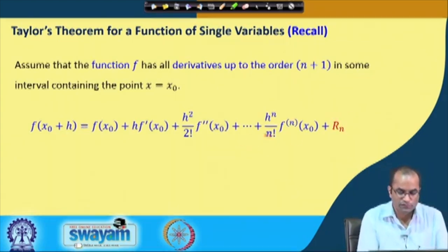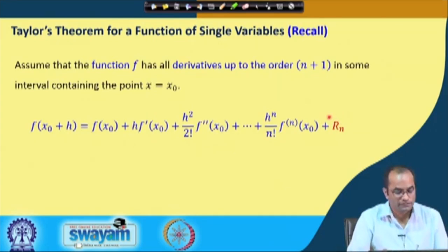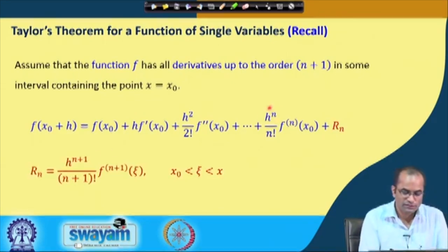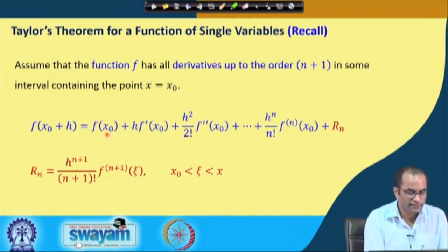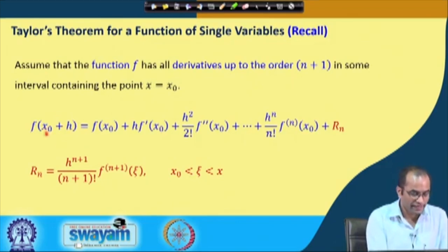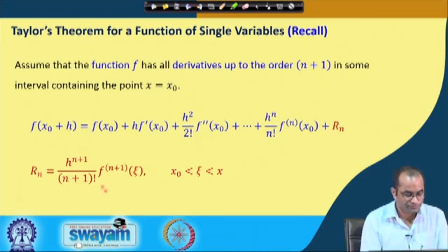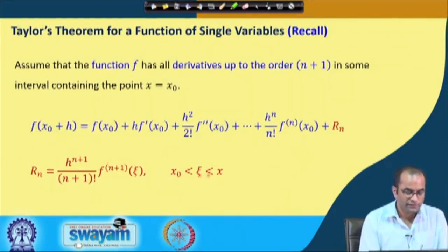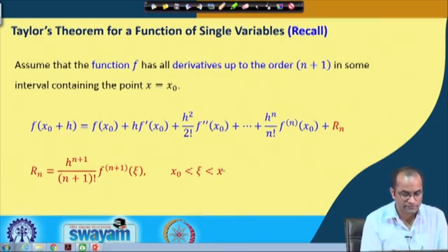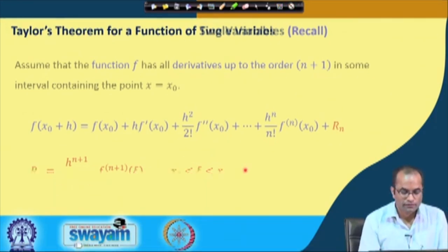We express f(x₀+h) as f(x₀) plus h times the first-order derivative at x₀, plus h²/2! times the second-order derivative, and so on — this is called the Taylor's polynomial. The remainder, or error term, is h^(n+1)/(n+1)! times the (n+1)th derivative evaluated at some point ξ that lies between x₀ and x₀+h, which exists but is not known precisely.